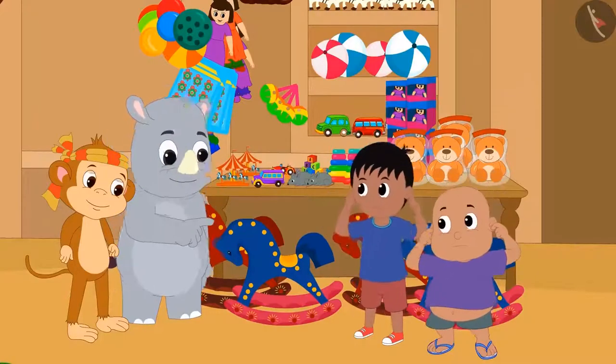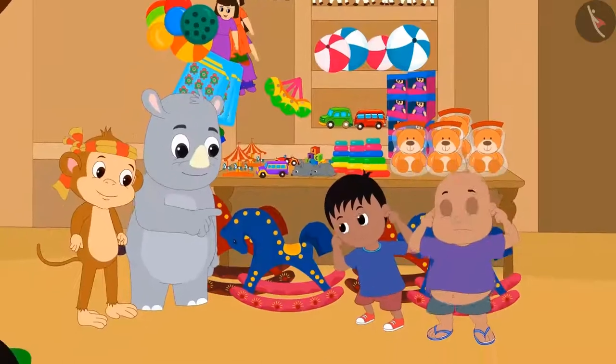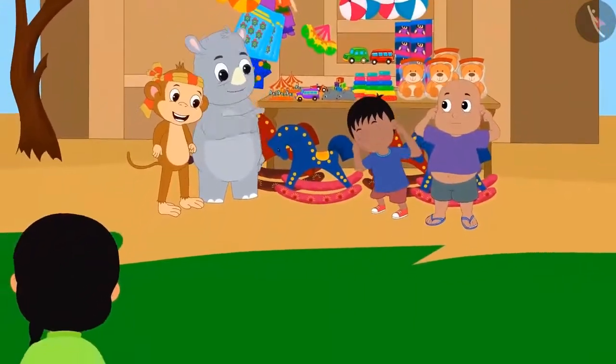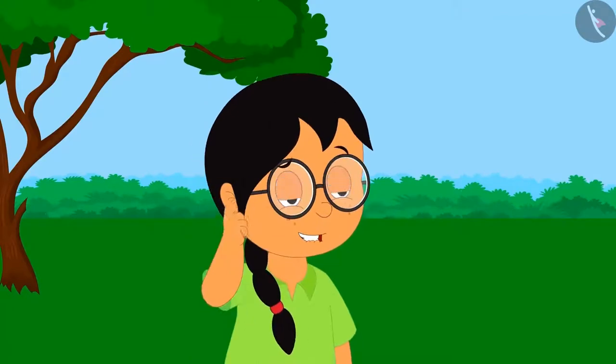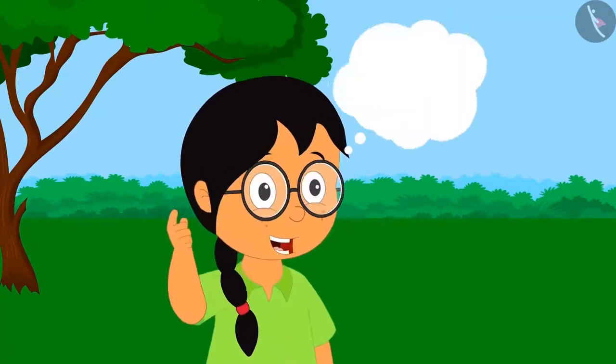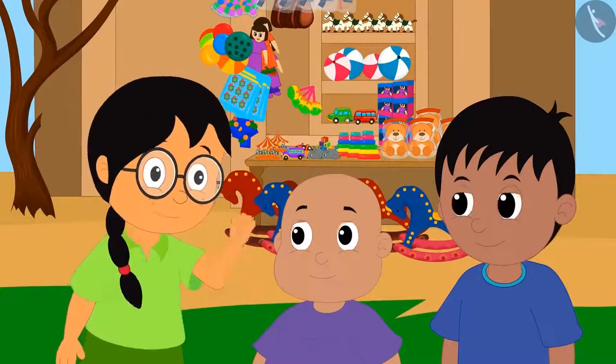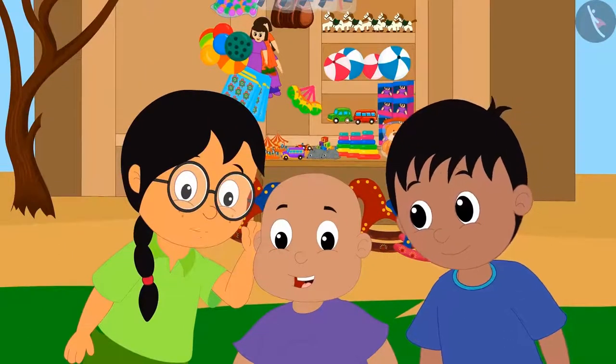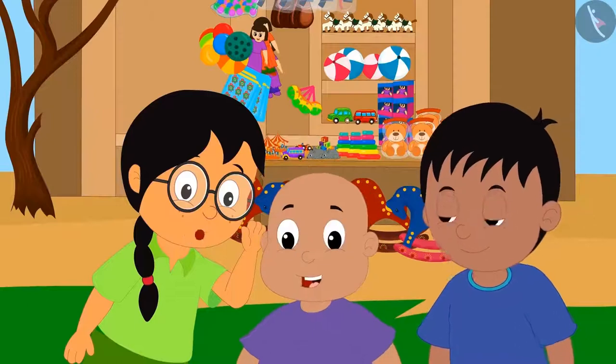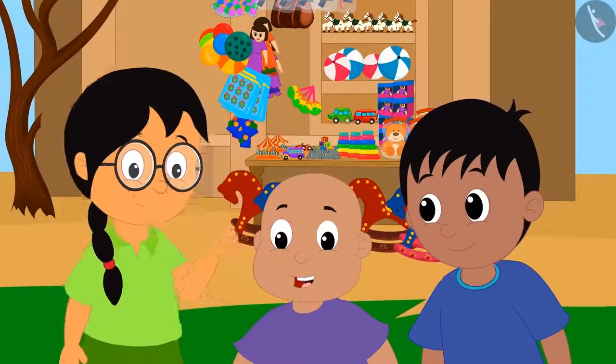When Gagu was teaching a lesson to Raju and Bablu, Minu was watching them from a distance. Minu decides to help Raju and Bablu. She goes to them and whispers in Raju's ears that she is going to show Gagu that they are very smart.